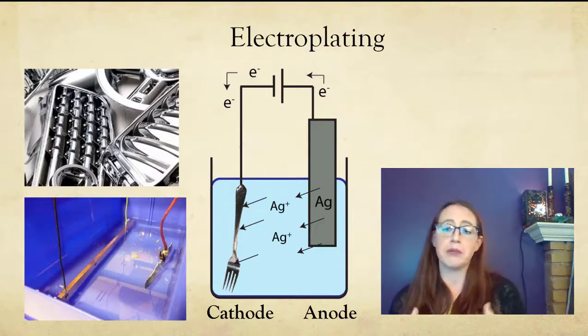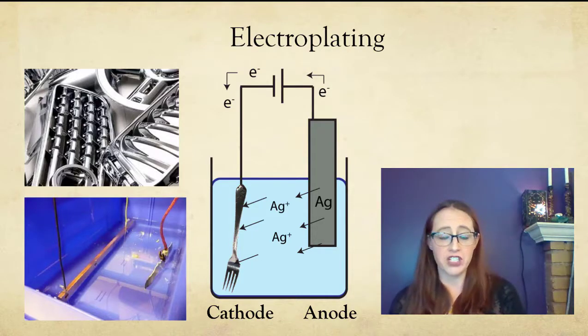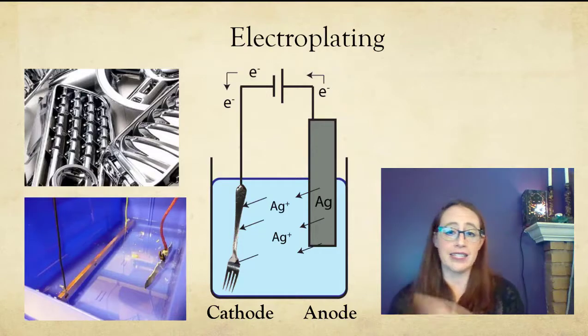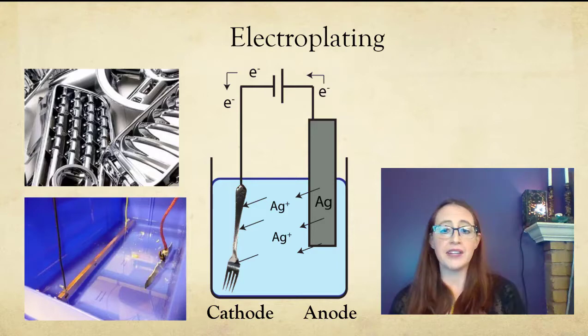So in electroplating, both the anode and the cathode are undergoing a half reaction involving the same metal. So on one side, it's being oxidized from the metal into the solution, into an ion. And then on the other side, it's being reduced and then plated out on the species.